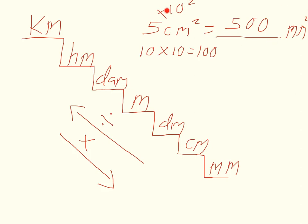Everything is the same — you're multiplying and dividing the same way as with linear units, and you're figuring out what to multiply or divide by the same way, by counting how many stairs up or down you're going. The only difference is now you're multiplying or dividing by squared units of measure, so you need to understand how to figure out what a squared unit of measure equals.